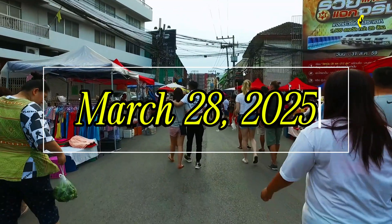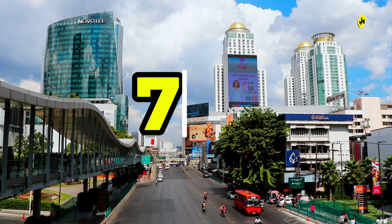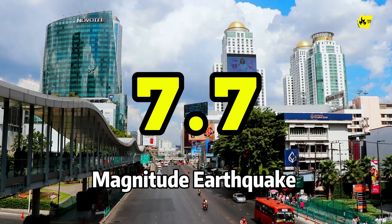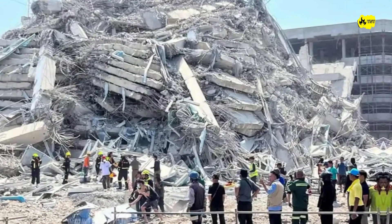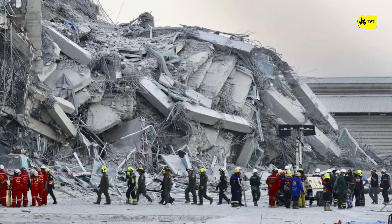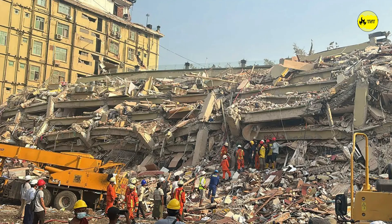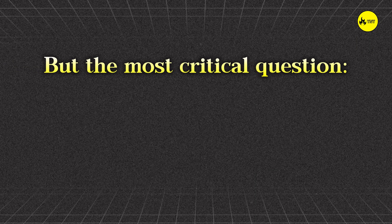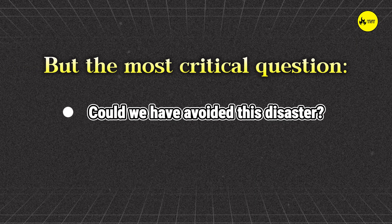On March 28th, 2025, a 7.7 magnitude earthquake struck Thailand. Hundreds dead, thousands displaced, and cities reduced to rubble. But the most critical question, could we have avoided this disaster?